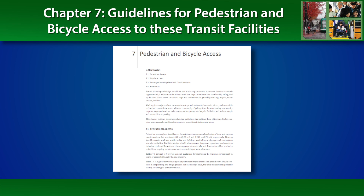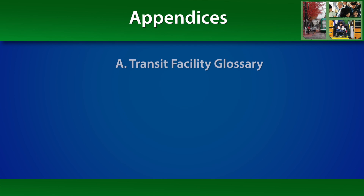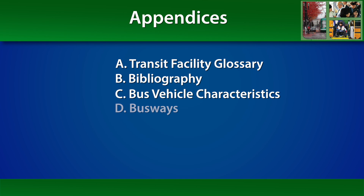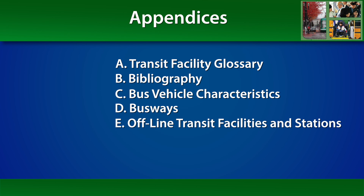The five appendices in the guide contain supporting information and include a transit facility glossary, a bibliography that includes the complete list of references mentioned throughout the guide, detailed information on bus vehicle characteristics such as bus dimensions and turning paths, and further information on busways and offline transit facilities and stations.